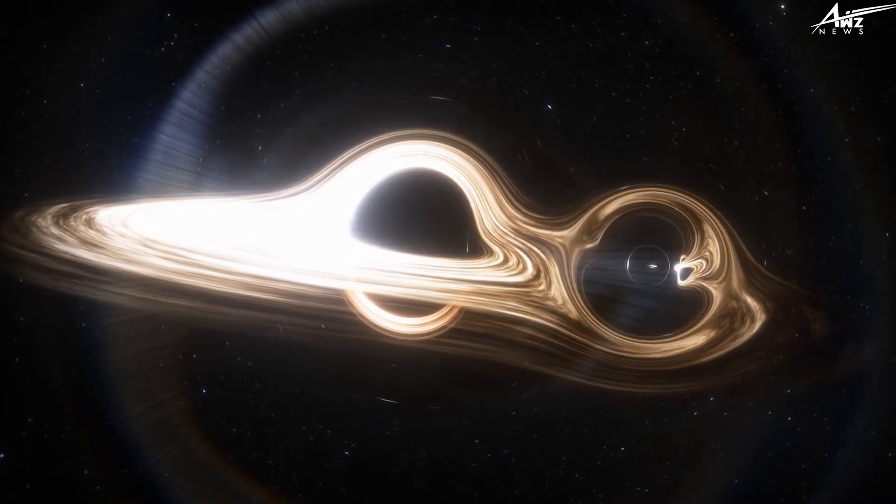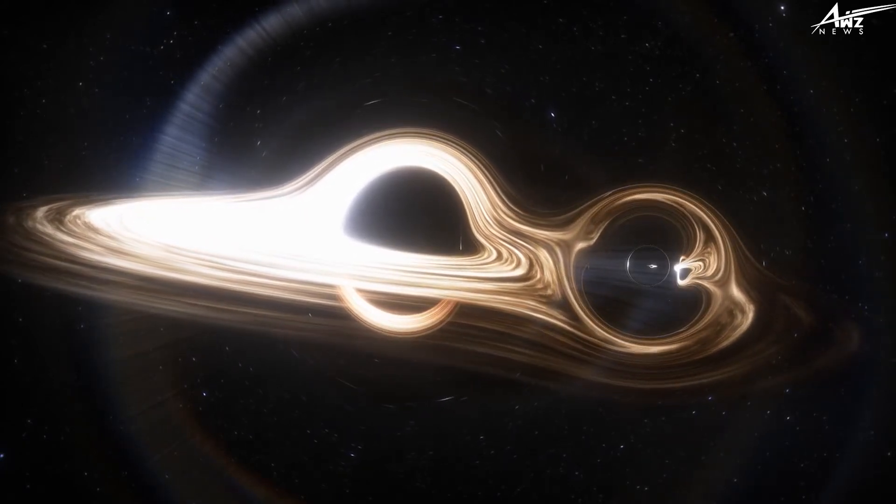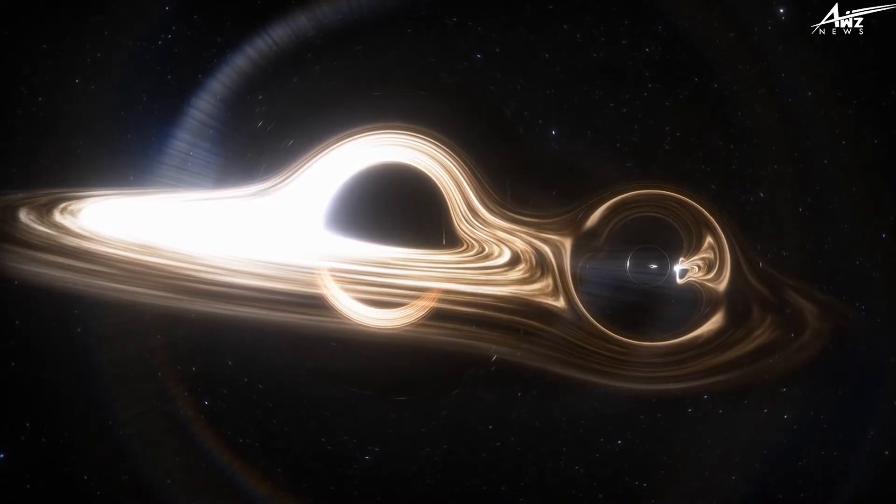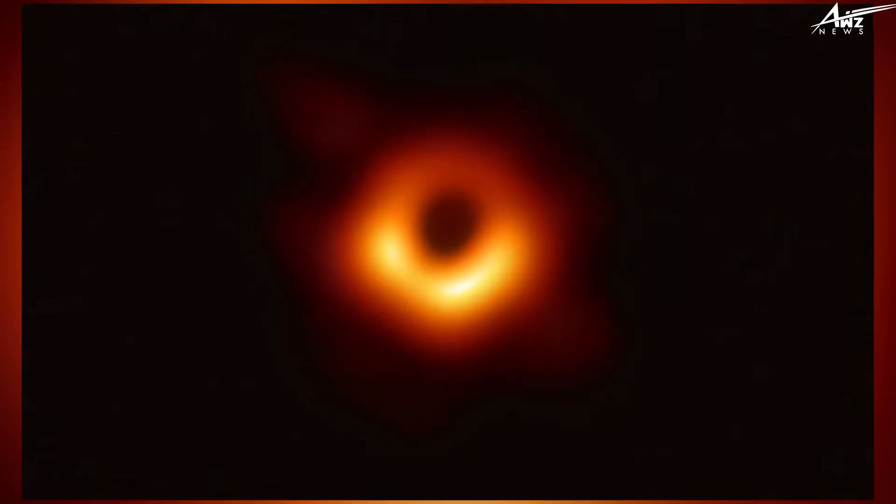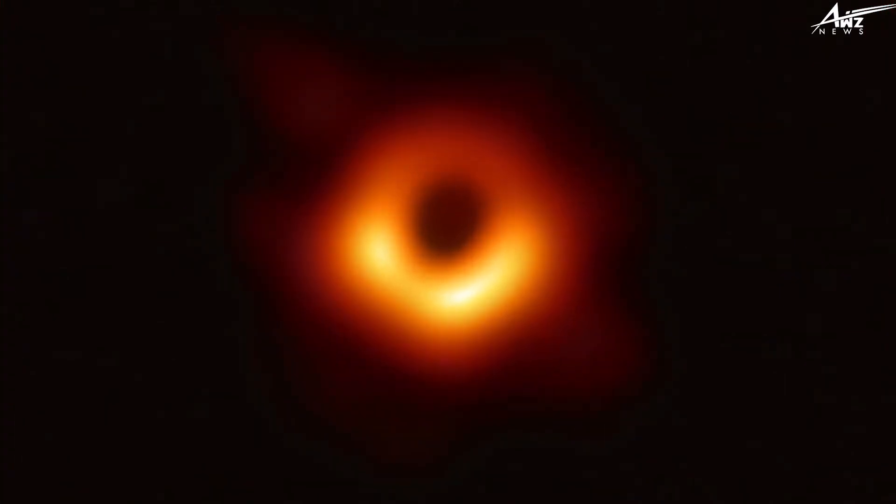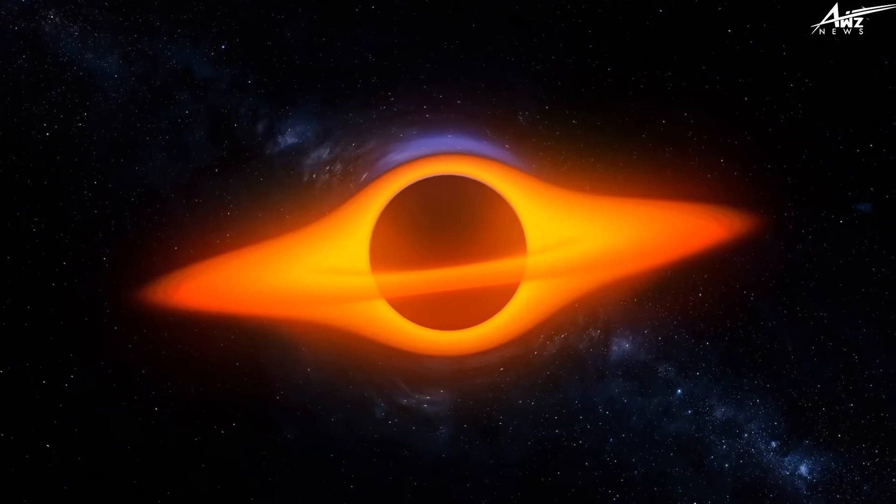After years of processing data gathered by radio telescopes all across the world, the Event Horizon Telescope Project was able to get the first image of a black hole. Because the incident occurred in a radio frequency spectrum to which the human eye is insensitive, the colors on the image are arbitrary.